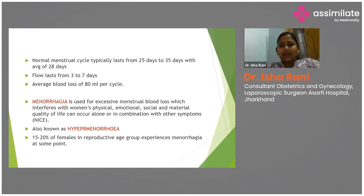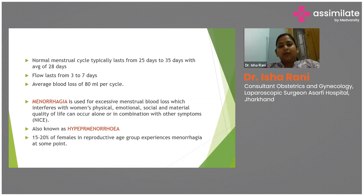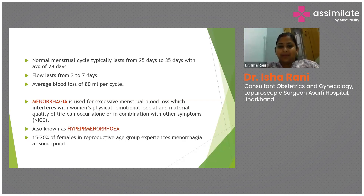However, if any person is having a cycle of 25 days or 35 days, it is not considered abnormal. The flow generally lasts from 3 to 7 days and the average blood loss per cycle is 80 ml.